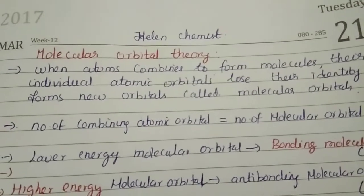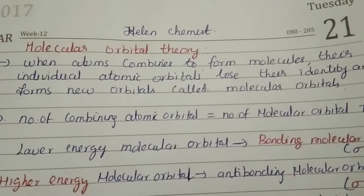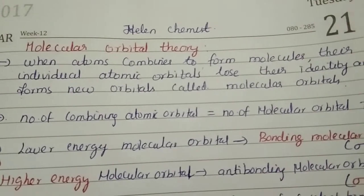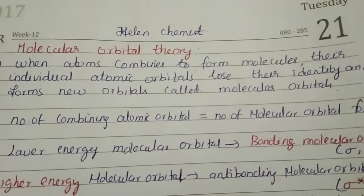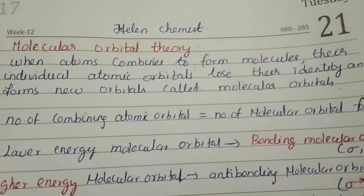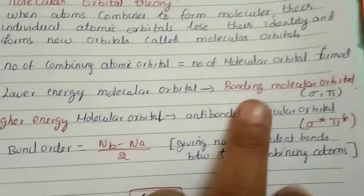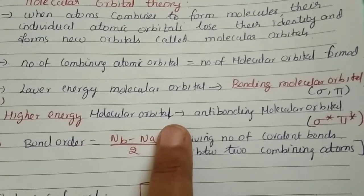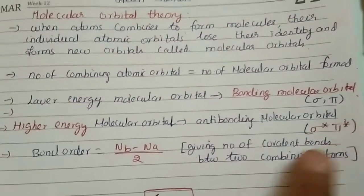Welcome to Helen Chemistry Channel. Today's topic is Molecular Orbital Theory. What is Molecular Orbital Theory? When atoms combine to form molecules, their individual atomic orbitals lose their identity and form new orbitals called molecular orbitals. The number of combining atomic orbitals equals the number of molecular orbitals formed. Lower energy molecular orbitals are called bonding molecular orbitals, denoted as sigma and pi. Higher energy molecular orbitals are called antibonding molecular orbitals, denoted as sigma star and pi star.